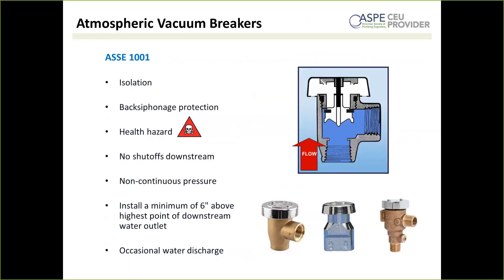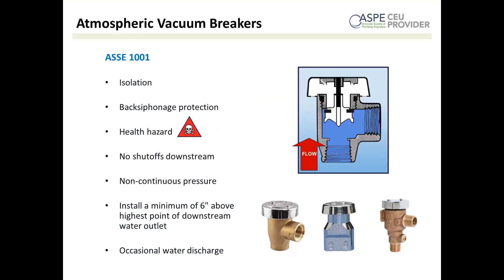The first device is an atmospheric vacuum breaker, ASSE standard 1001, typically for isolation — protecting hazards within a property. It's a point-of-use device that protects from back siphonage only, but can be used for health hazards. When you turn your water on, water causes the float to rise and seal the atmospheric vent. If you get a back siphonage condition — negative or sub-atmospheric pressure — it sucks that float back down, breaking the vacuum. This way it siphons in air rather than potentially contaminated water.